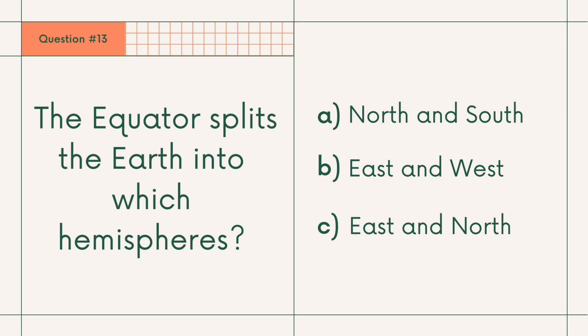Question number 13: The equator splits the earth into which hemisphere? A. North and south, B. East and west, or C. East and north. Answer: A. North and south.